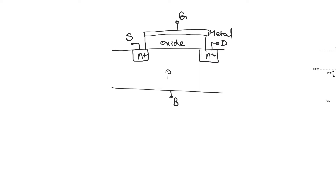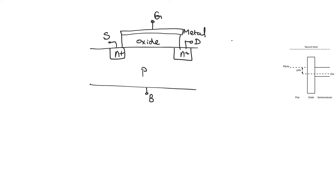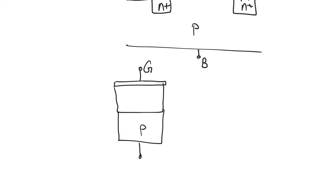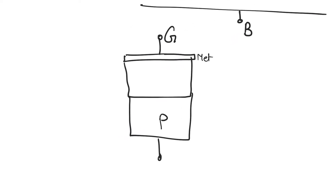If we look at the MOSFET, we will find that there is a vertical structure which consists of a metal plate, followed by an oxide, followed by a P-type semiconductor, as well as the horizontal structure formed between the drain and the source. Let's take a look at this vertical structure — metal plate, then oxide, then a semiconductor. This is called an MOS capacitor. MOS stands for metal oxide semiconductor.